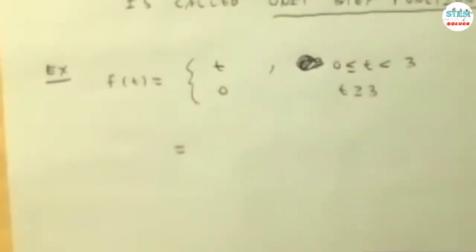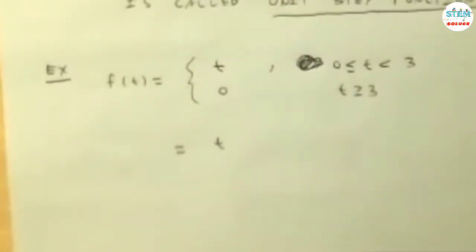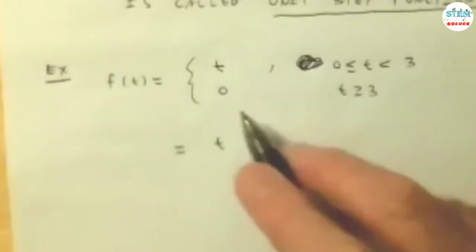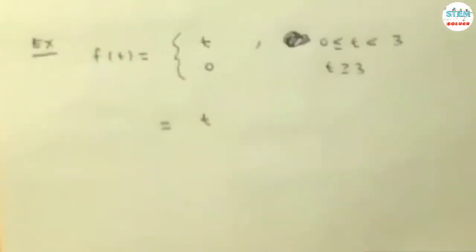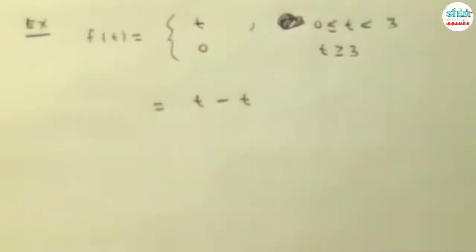Writing this as a unit step function, what we want to do is start with t. Now we want to get rid of it - it needs to go to 0. So what we're going to do is subtract it. Because t minus t gives you 0.